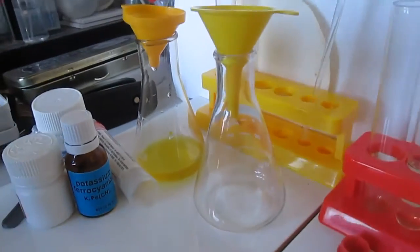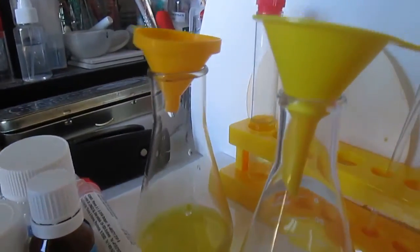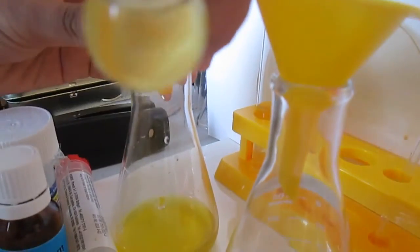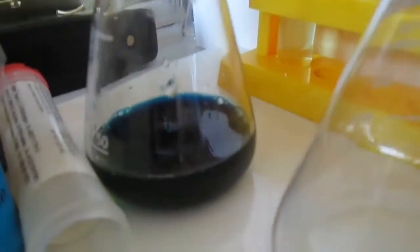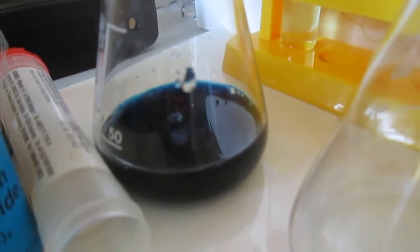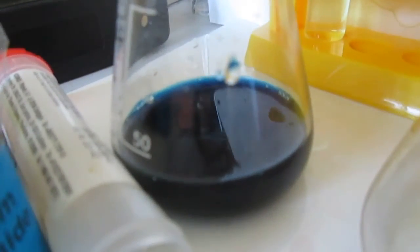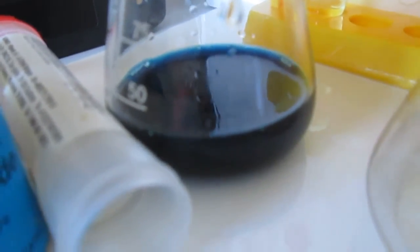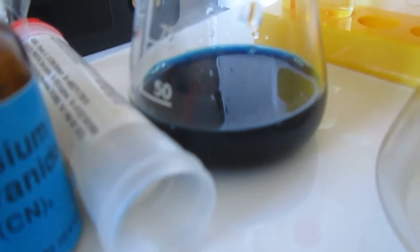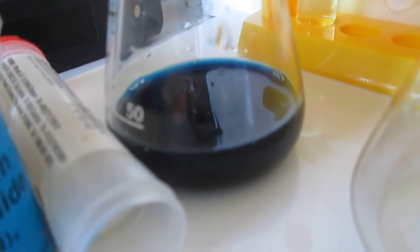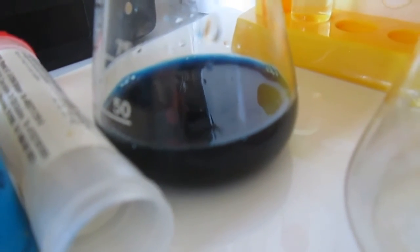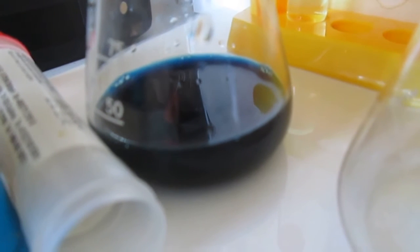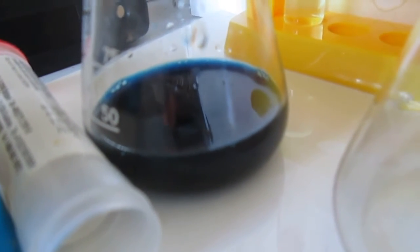We then pour the potassium ferrocyanide into the yellow solution. The potassium ferrocyanide reacts with the iron ions to produce a very dark blue solution. Potassium ferrocyanide is used in chemistry as an indicator to detect dissolved ions in solution.